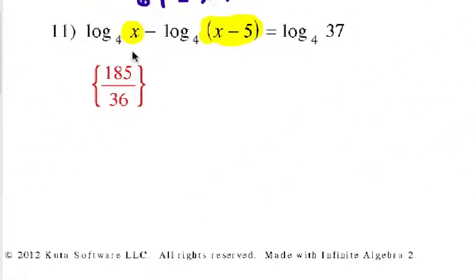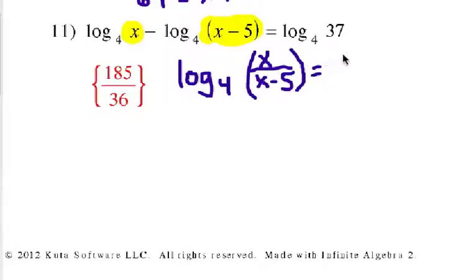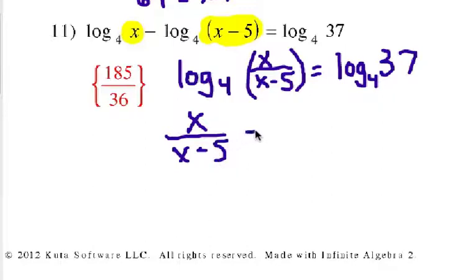Alright, number eleven. So, we have log base four of this expression minus log base four of this expression. So, remember the quotient property says that we can write it and condense it down into this. Log base four of this expression divided by this expression. And then we have log base four of that expression equals log base four of that expression. So, those expressions there must be equal. There's our equation. X over x minus five equals 37.